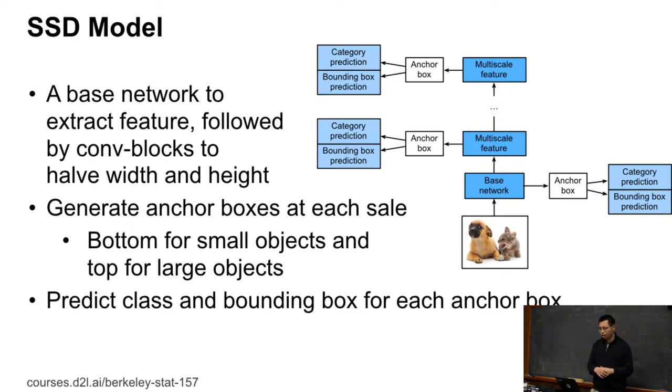So then the major difference here is that we don't need to predict how the anchor boxes are there. For each pixel, we just generate a bunch of them. So that should make the pipeline much easier.